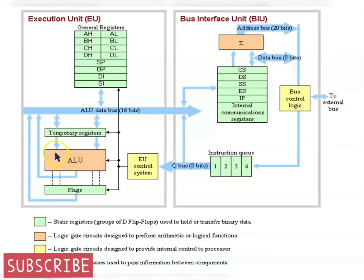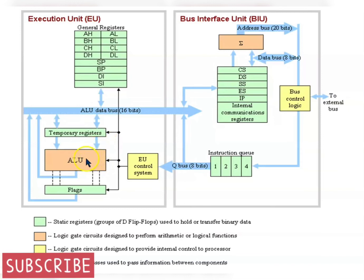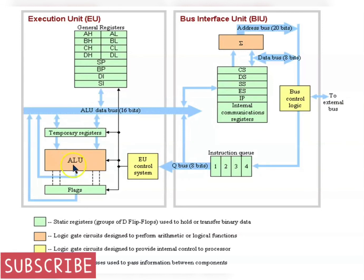The ALU performs all logical and arithmetic operations, so the ALU is the calculator of the computer. If the CPU becomes more powerful and faster, it means the ALU is designed to solve more complex operations, and the ALU occupies more space in the CPU, making it more expensive. That is why the ALU is designed to be just powerful enough to make the CPU faster but not too expensive.